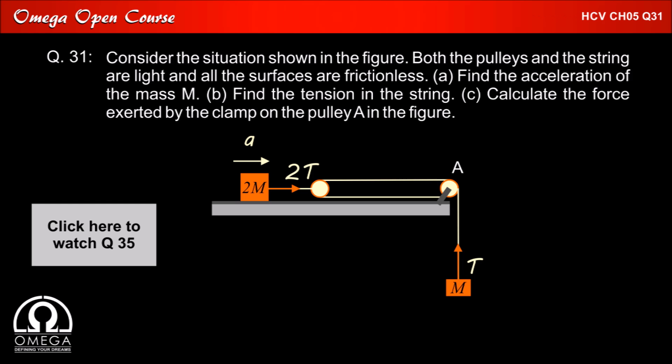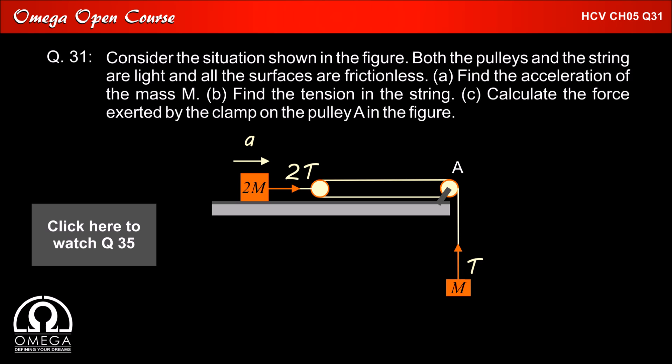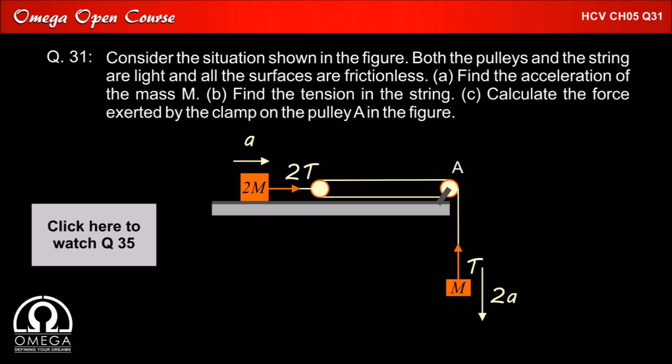If we assume the acceleration of the block of mass 2m to be A, the acceleration of the block of mass m will be 2a.